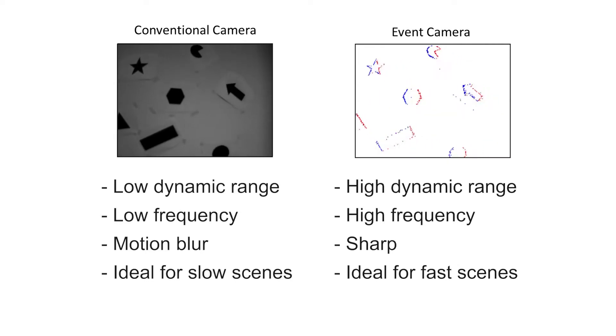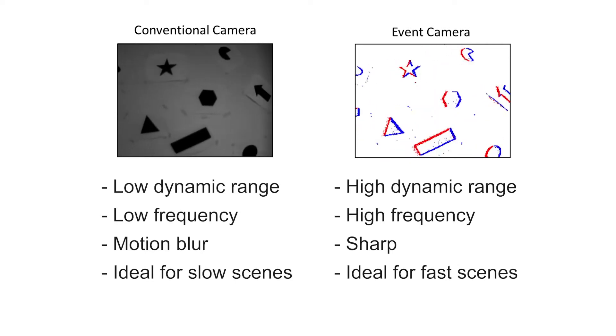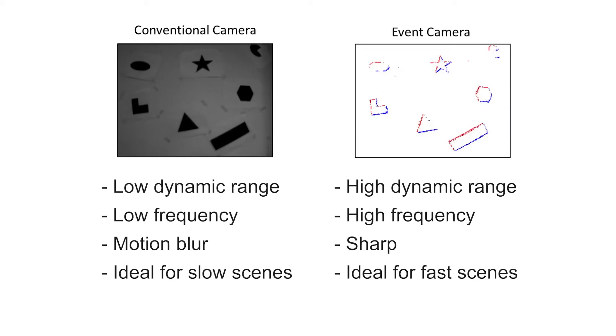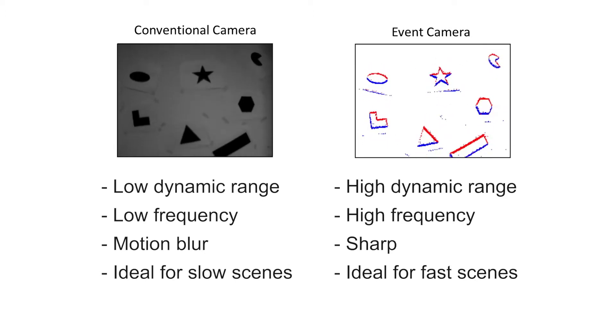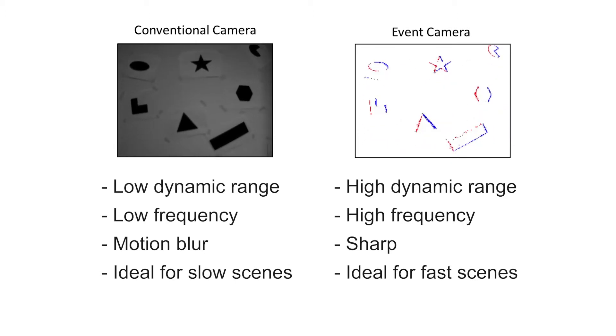Event cameras are high dynamic range, high frequency, not easily motion blurred, and ideal for capturing fast motions, though poor at capturing very slow and static scenes.